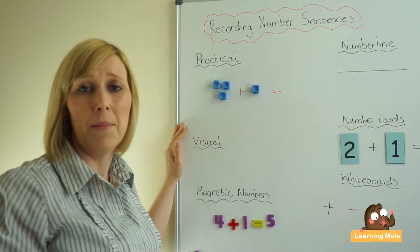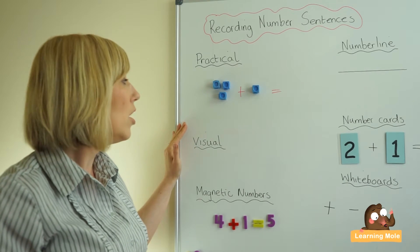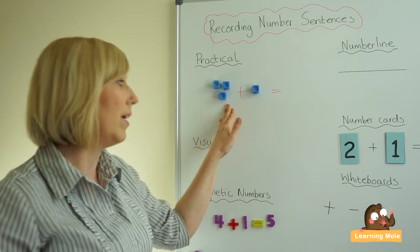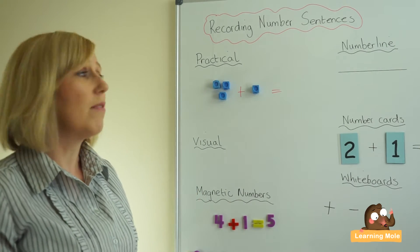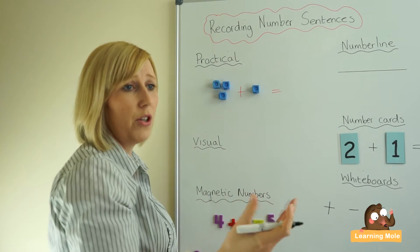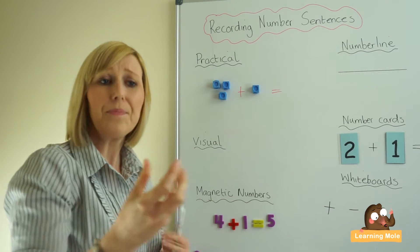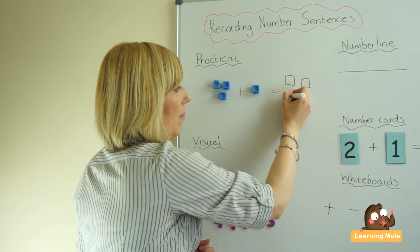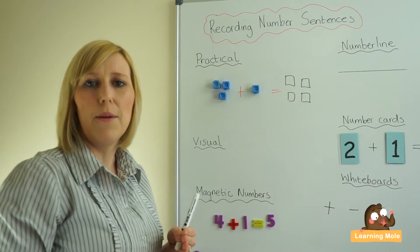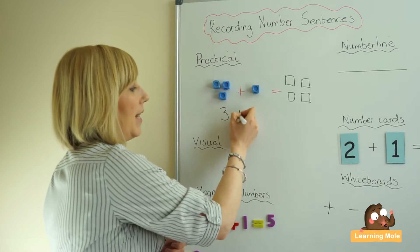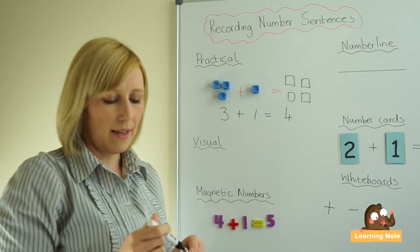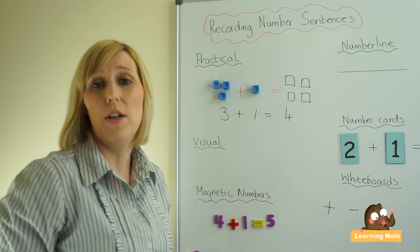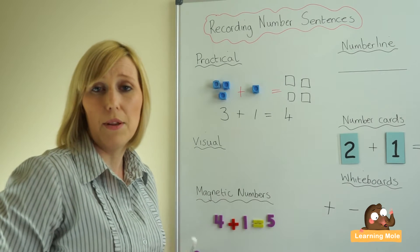I would get my child to make a number sentence, or provide one for them, and at this point I would also give them the symbols — I wouldn't expect them to record using the symbols by themselves just yet. I might say 'can you read this number sentence?' and get them to verbalize it, for example 'three add one equals', then get them to solve it — write the answer four, draw four cubes, or physically get four cubes and put them on there. Then I would record it for them: 'tell me what I need to write — the number three, then the symbol plus, then one, then equals, then four.' If your child feels ready to translate that practical representation themselves, allow them to do it.